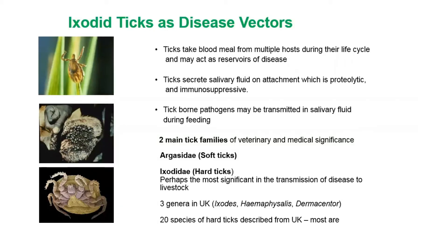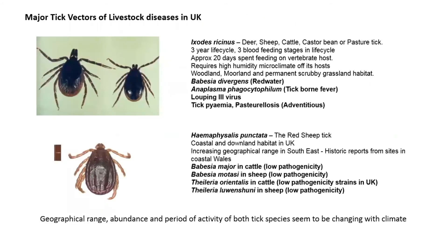The major tick vectors of livestock disease in the UK are Ixodes ricinus — the common deer, sheep, cattle, castor bean, or pasture tick — and one for the south, Haemaphysalis punctata, the red sheep tick.